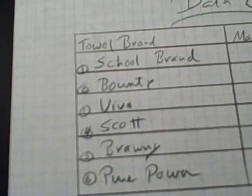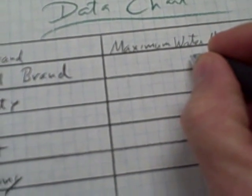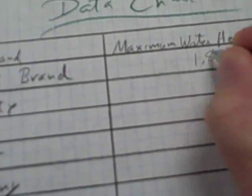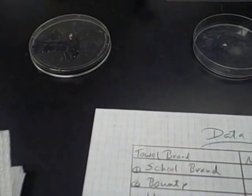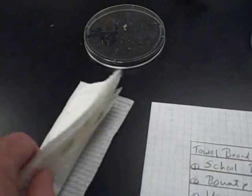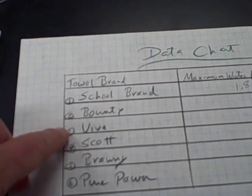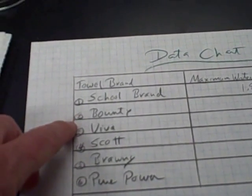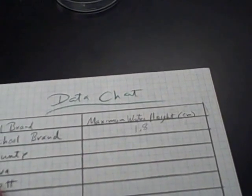You will make a data chart on your graph paper, and the maximum water height it raised in 30 seconds was 1.8 centimeters. Then you would do that for the other five that you choose—you should have six. You can choose any five you want. Remember though, our hypothesis was that Bounty and Viva would probably be the best, so you might want to make sure you include those.